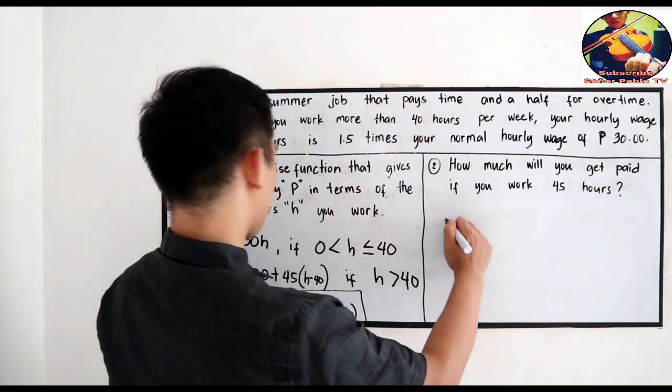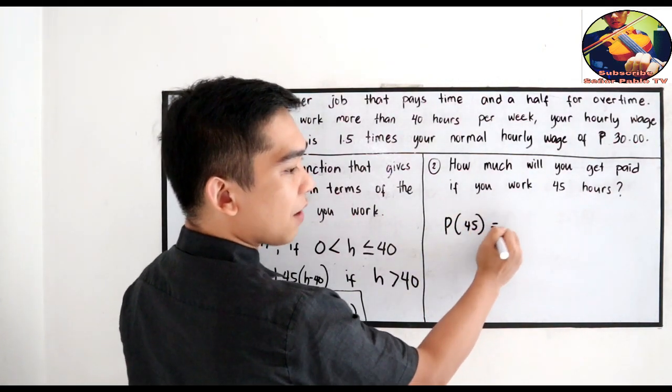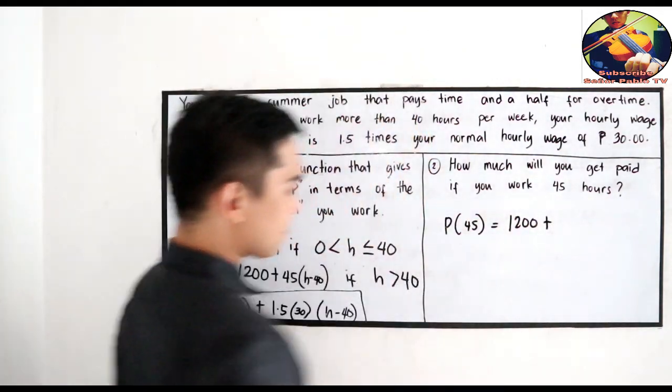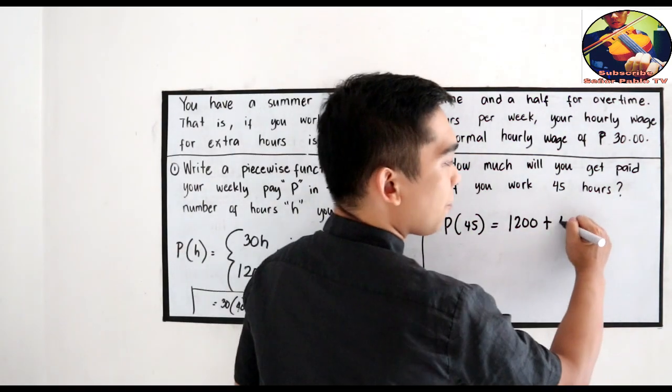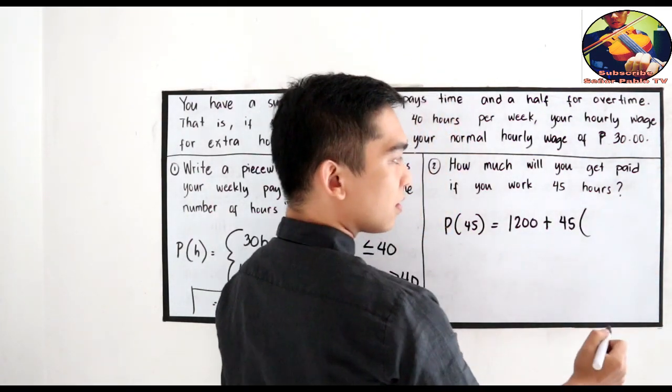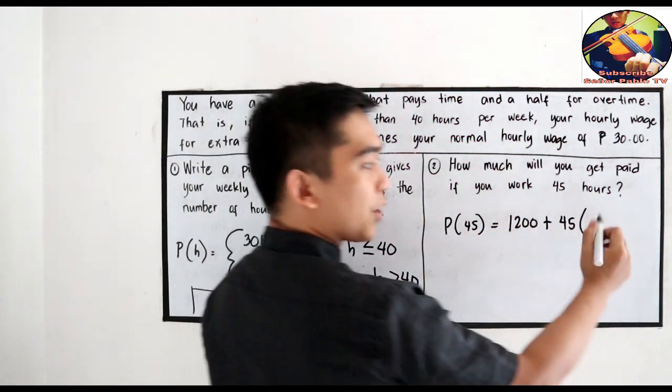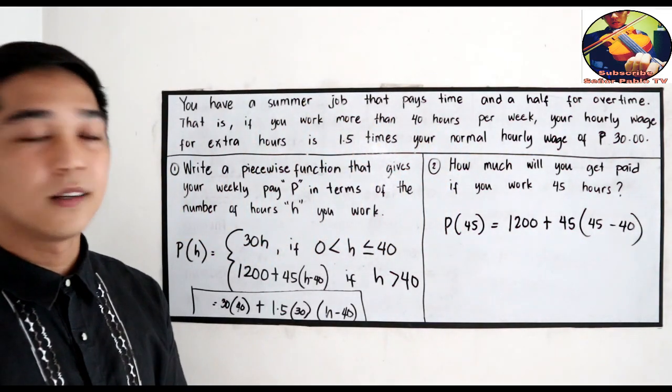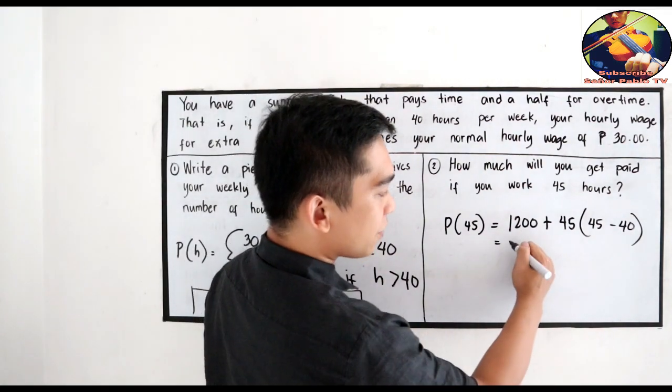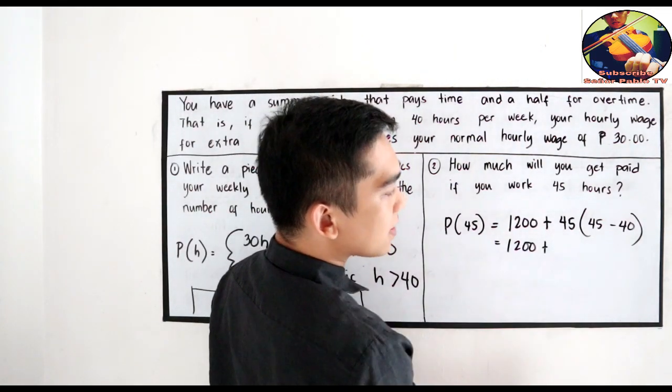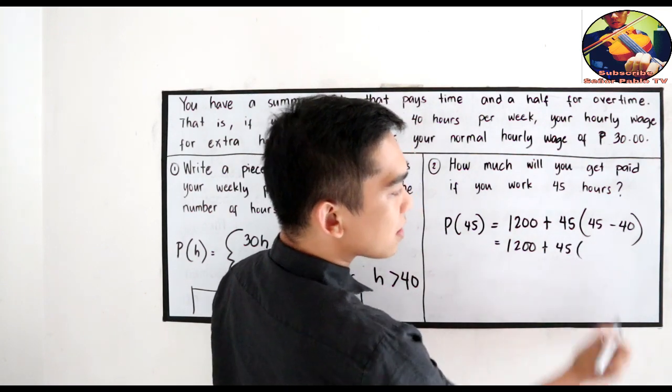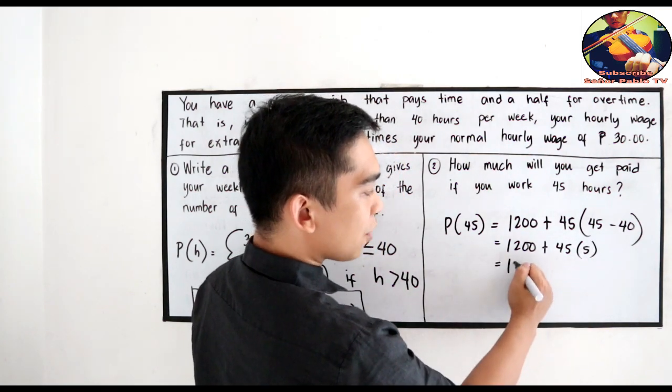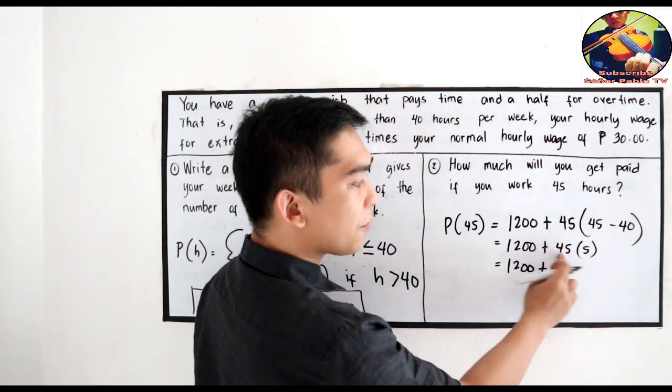So P of 45, the number of hours. Then 1,200 plus 45 times the number of hours, our h is 45. Now, 45 minus 40. So we have 1,200 plus 45 times 45 minus 40. So 1,200 plus 45 times 5.